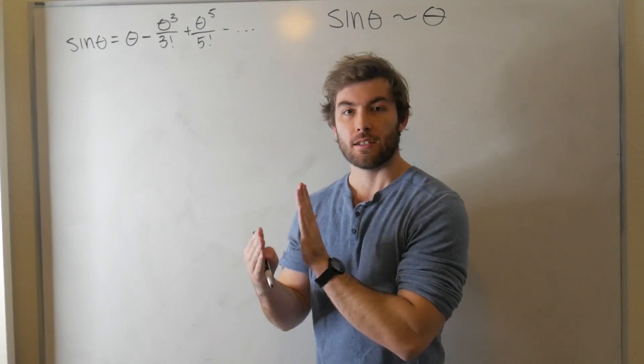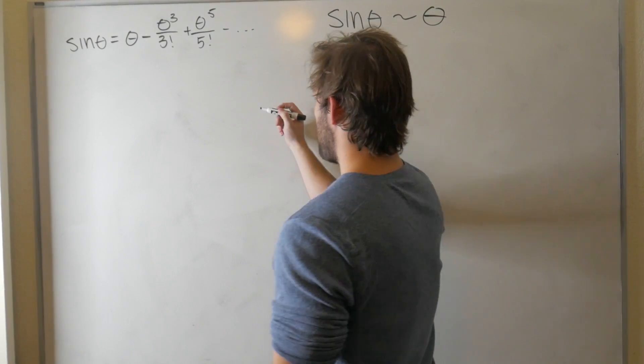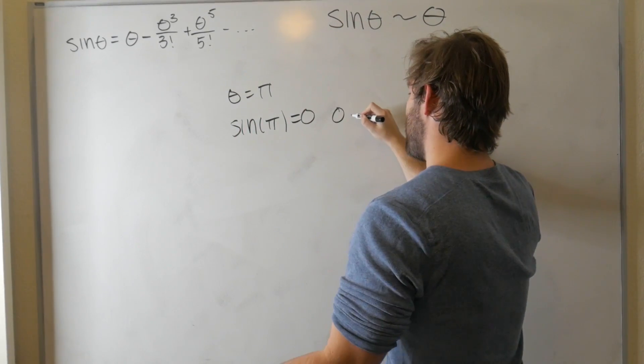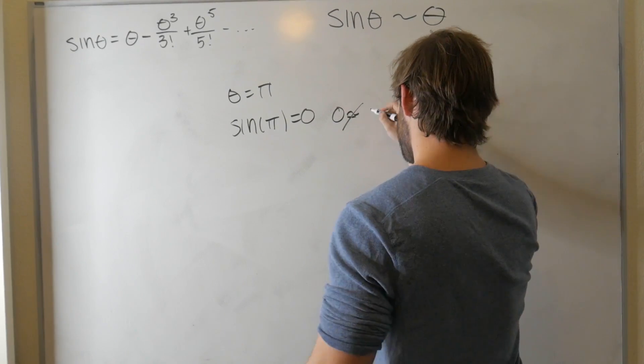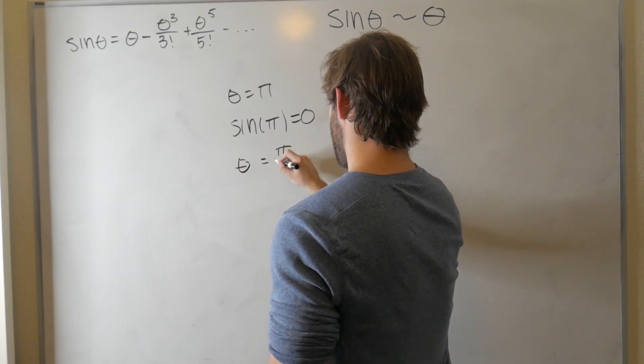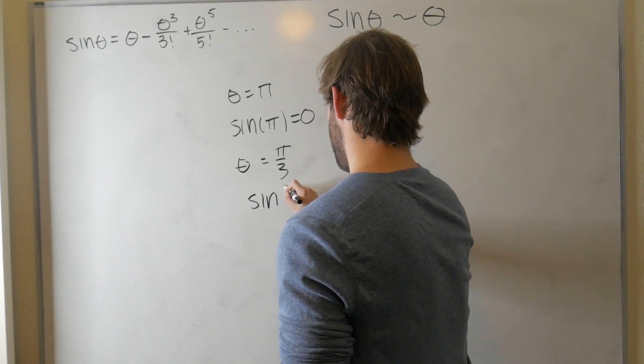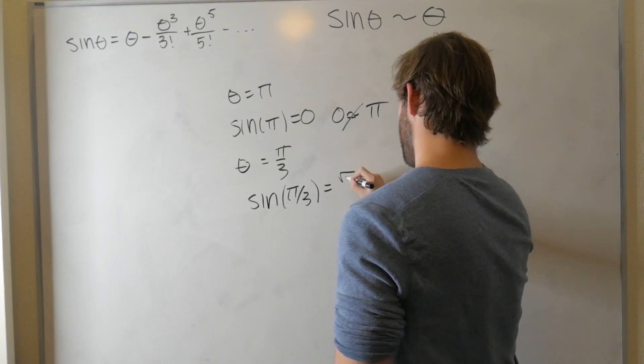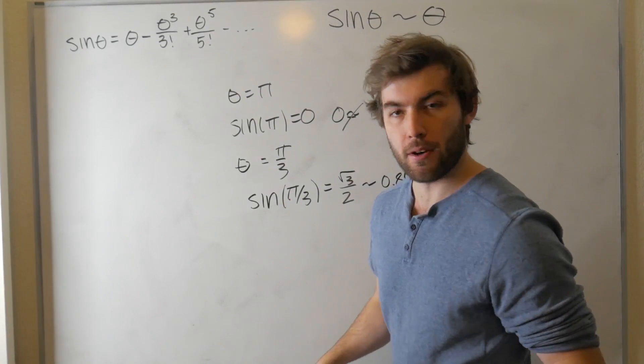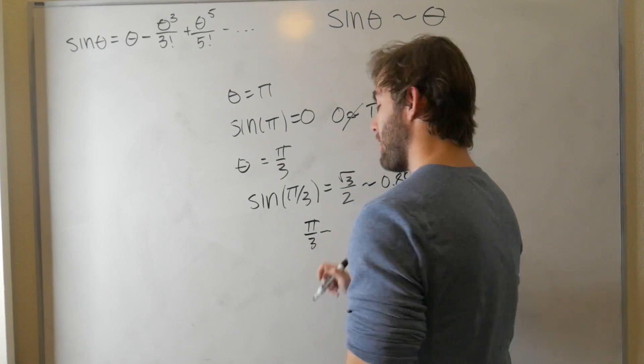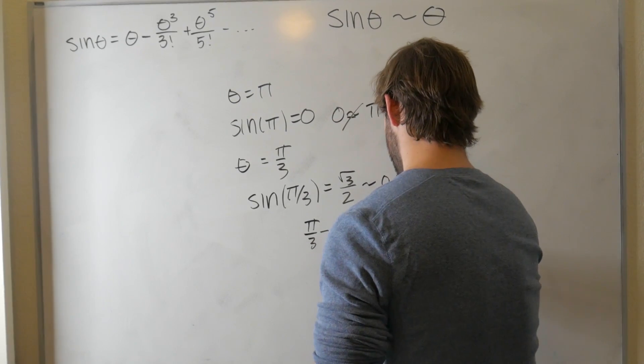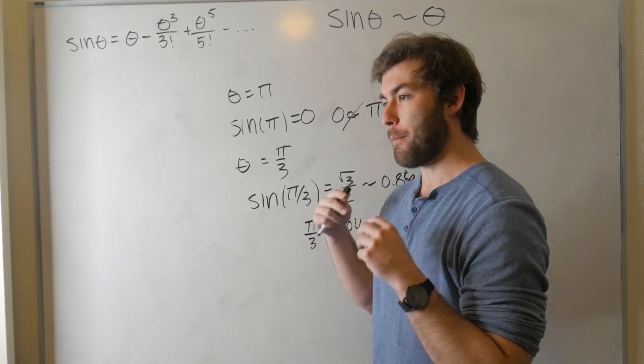We already know that as we decrease the angle, the approximation becomes better. If we use theta equals pi, the sine of pi is equal to 0, and 0 really isn't that close to pi, depending on the problem. If we use theta equal to pi over 3, that's 60 degrees. Well, sine of 60 degrees is root 3 over 2, which is about 0.86. And pi over 3 is about 1.04. That's closer. It depends on how much error you're willing to accept.